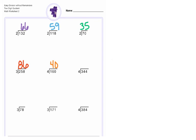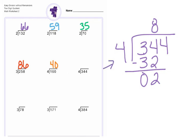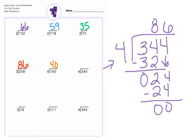We're going to complete one more problem together. We have 344 divided by four. Four cannot go into three because it's bigger, but four can go into 34. Four times eight is 32. Complete our subtraction: four minus two is two, and three minus three is zero. Check that our remainder, two, is less than the divisor, which is four — it is. Bring down your four. Four times six is 24, and 24 minus 24 is zero. No remainder. Our answer to number six is 86.